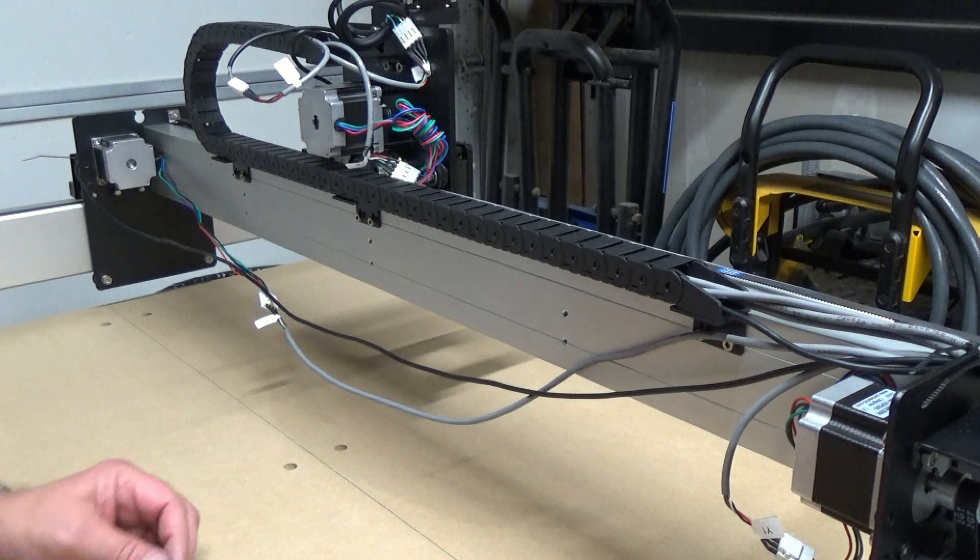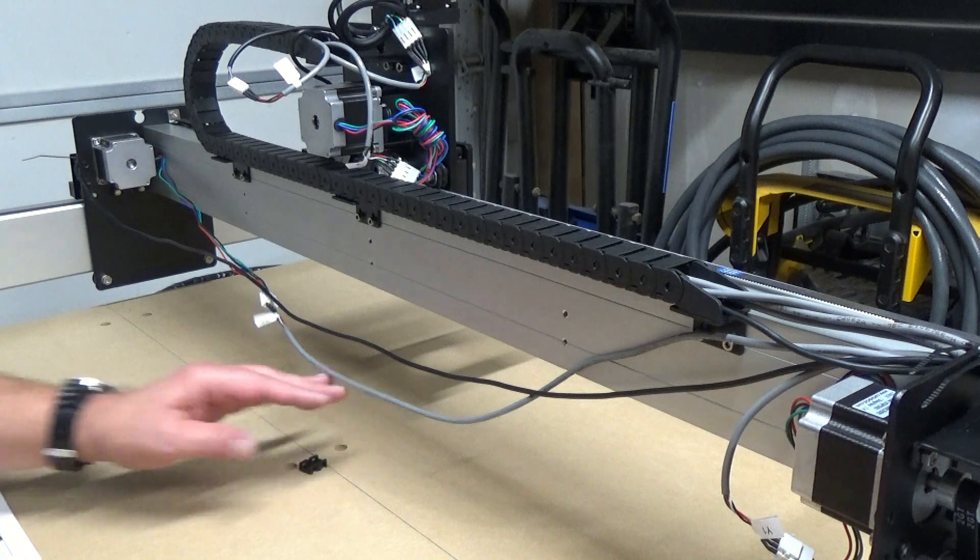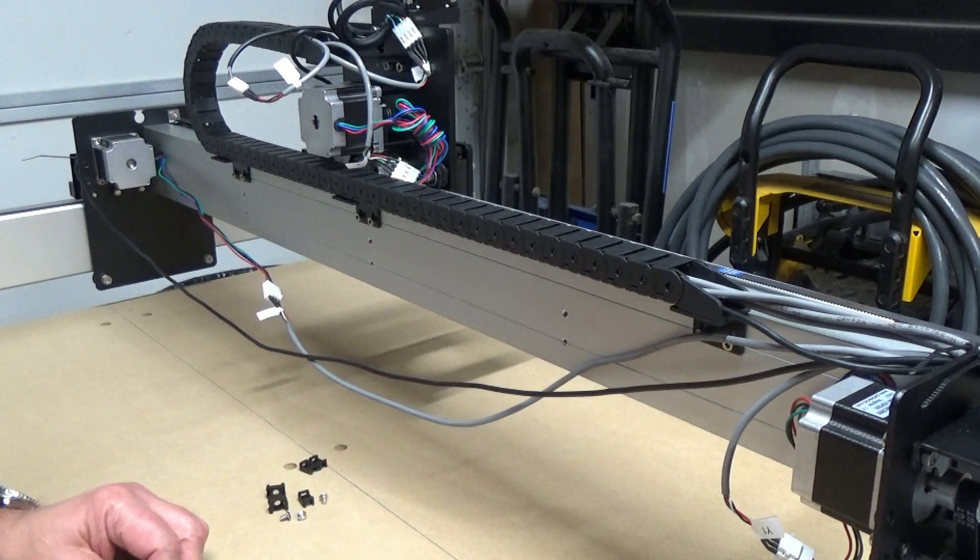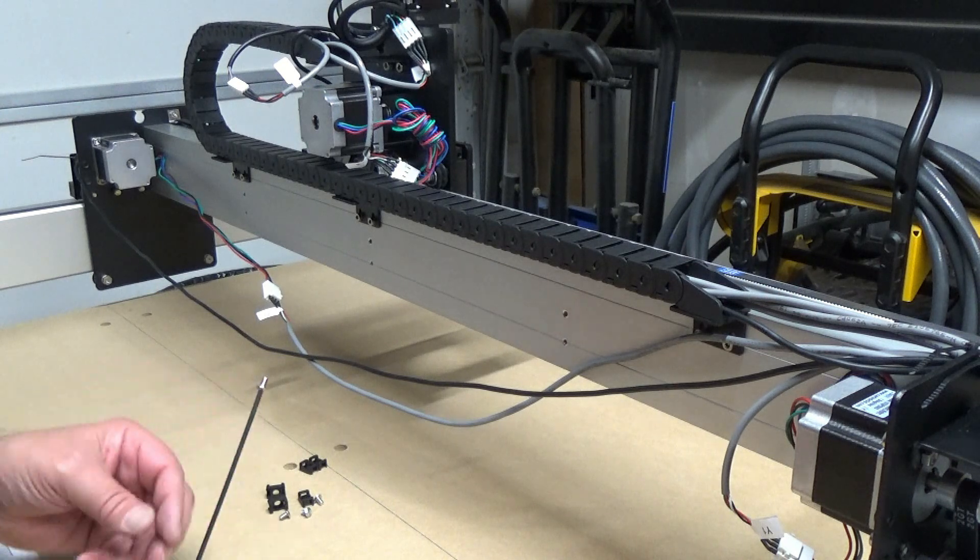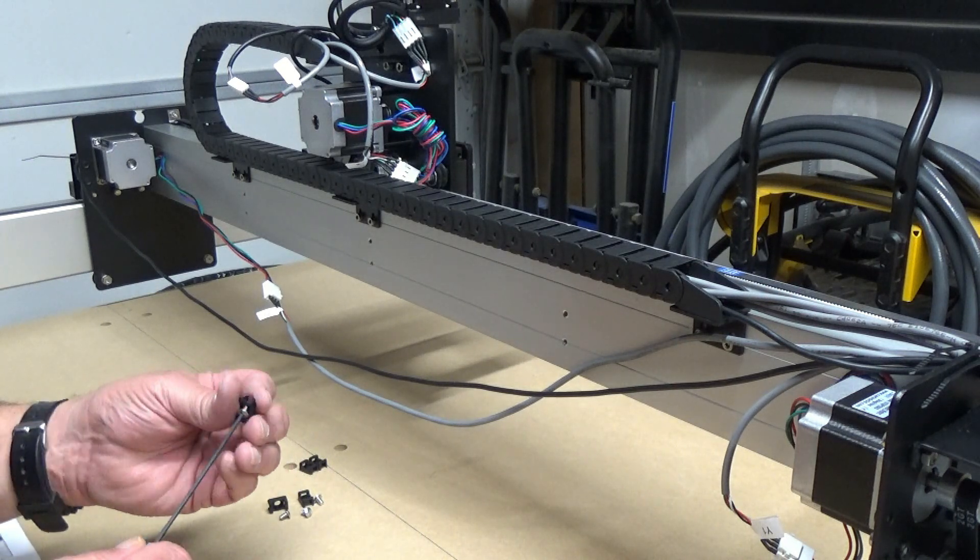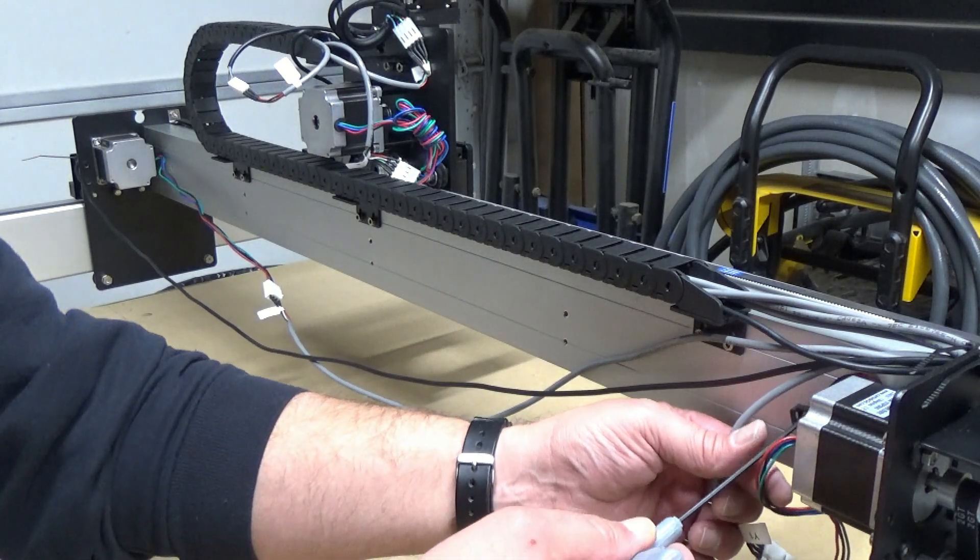Next we can install our wire tie clamps. So we have five of these. And let's see. Get those out of here. And a couple of little screws with it. Takes a two millimeter Allen wrench. And then we'll just go ahead and put those into place.